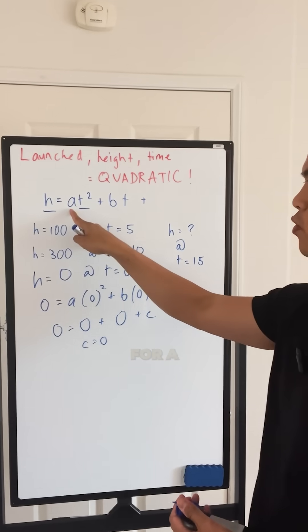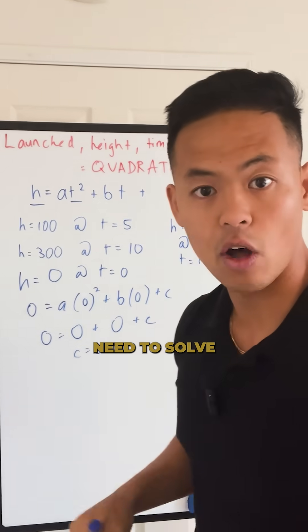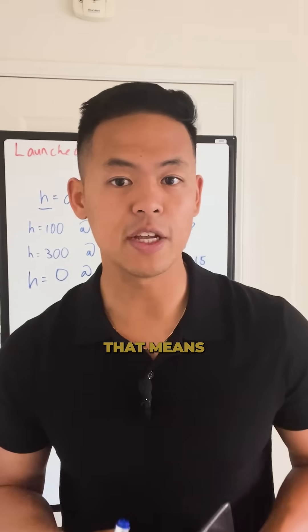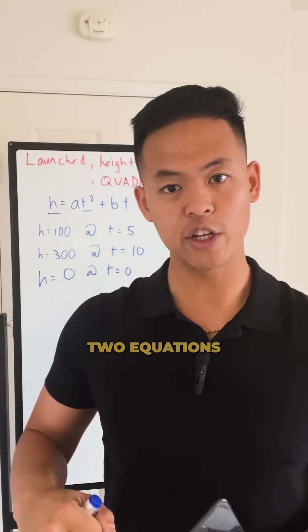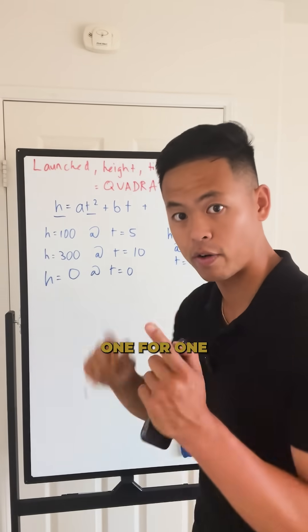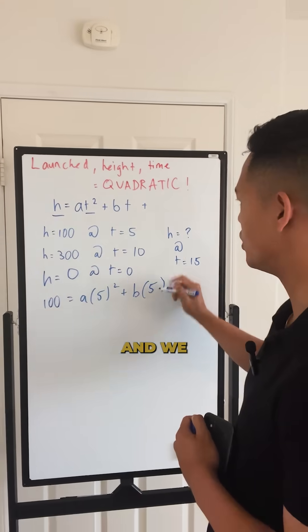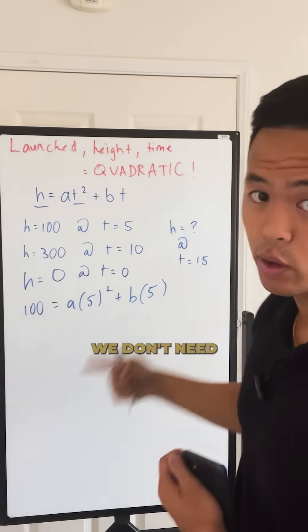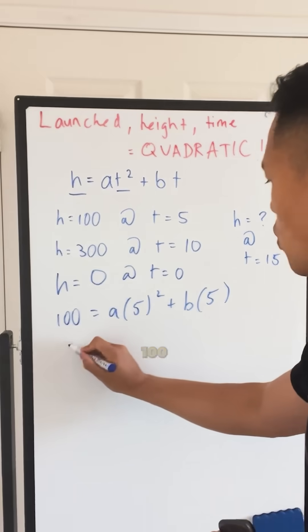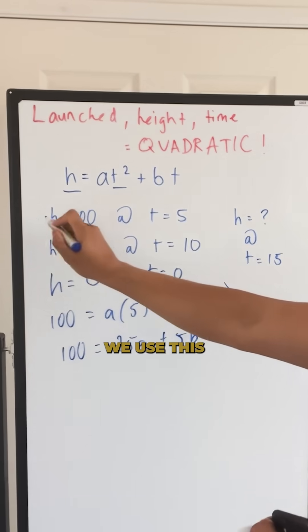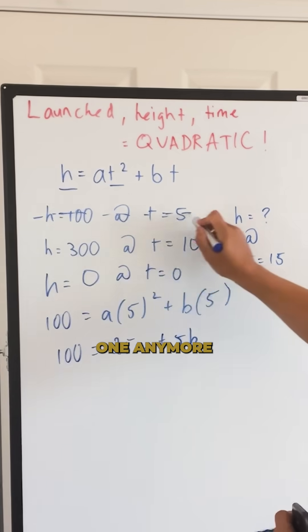Now we still need to solve for A and B. If you have two unknowns, you need two equations. Let's use the first point where 100 equals A times 5 squared plus B times 5. We don't need to write C anymore because we know it's zero.